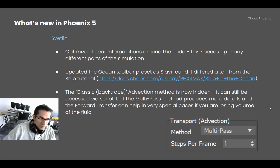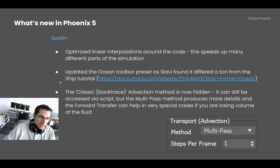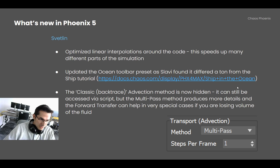I also optimized all linear interpolations around the code, which speeds up many different parts of the simulation, some parts of the preview, and rendering as well — so now Phoenix is generally faster. I also updated the Ocean toolbar preset because Slavi found it had a ton of differences with the Ship in the Ocean example scene and tutorial on the docs site, so now they are pretty much equalized.